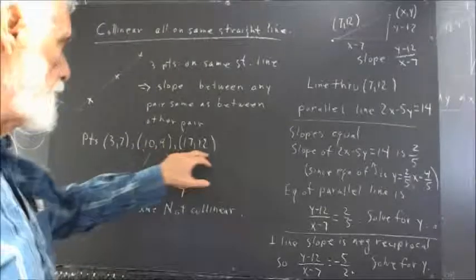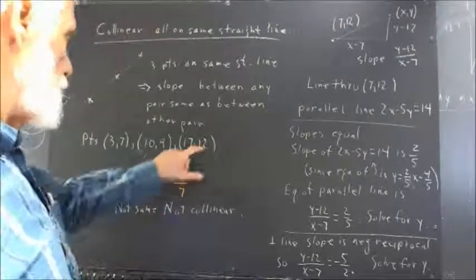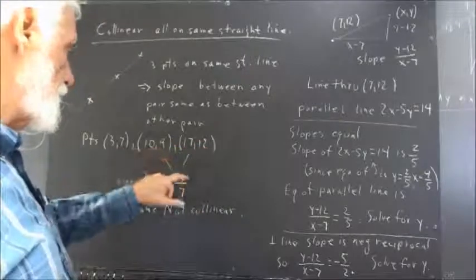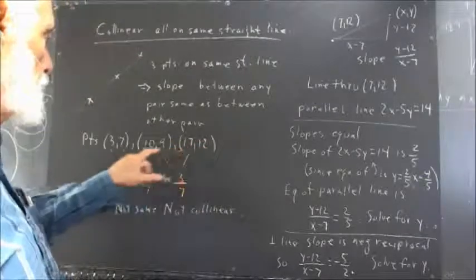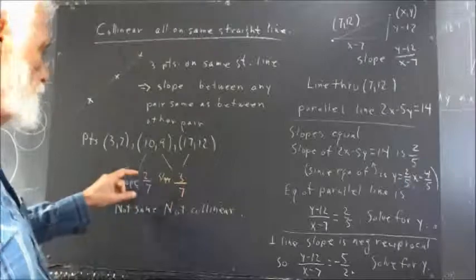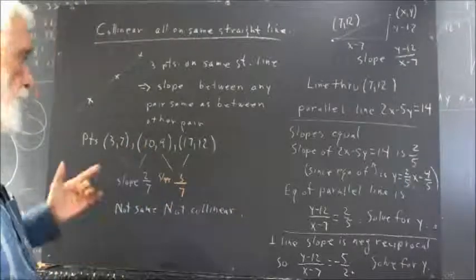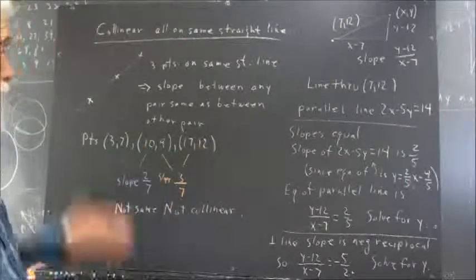Between 10, 9 and 17, 12, well, the rise is 12 minus 9, which is 3. The run is 17 minus 10, which is 7. Well, 2/7 is not the same thing as 3/7. So these points are not collinear.